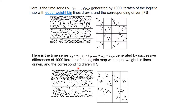Using the same time series of 1000 logistic map iterates but now with equal weight bins, the bin boundaries are drawn so that the same number of points lies in each bin. The ranges are not equal — some bins span a small range and others a larger range — but the number of points in each bin is the same. This gives yet another distinct fractal pattern, demonstrating that fractal patterns depend on both the binning method and the data sequence.